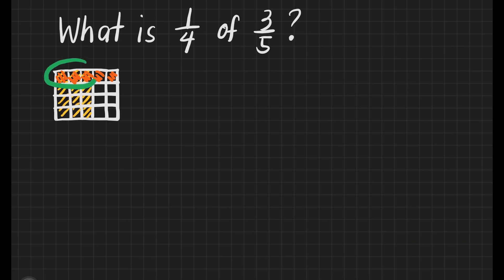We have these 3 parts that are being shaded twice. So we'll write 3. Then this box is divided into how many parts? That's 20 parts. So our answer for this question is 3/20.